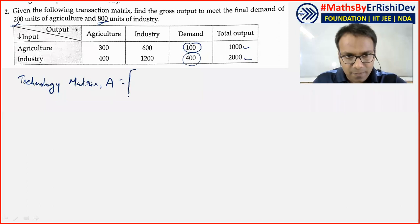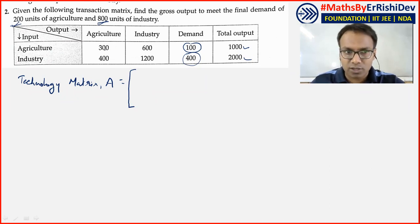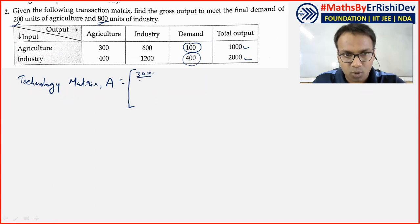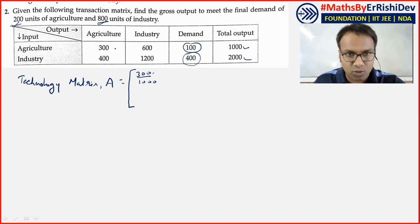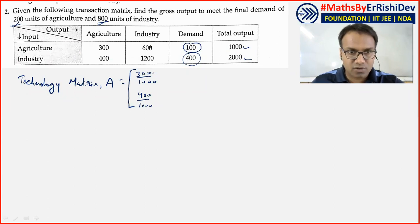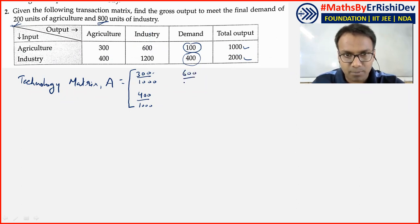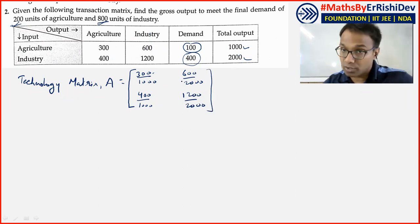The technology matrix represents each industry's input with respect to total output. We compute: agriculture row — 300 upon 1000 for the agriculture column. For industry: 600 upon 2000 and 1200 upon 2000. So the first job is to create the technology matrix.